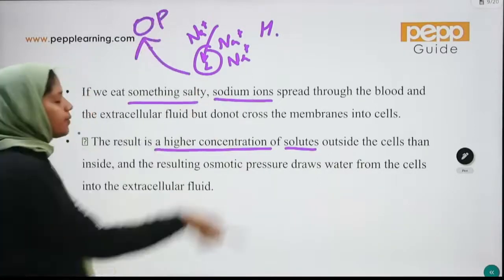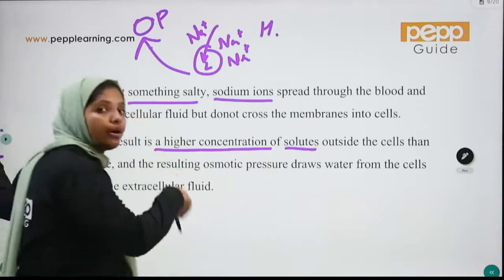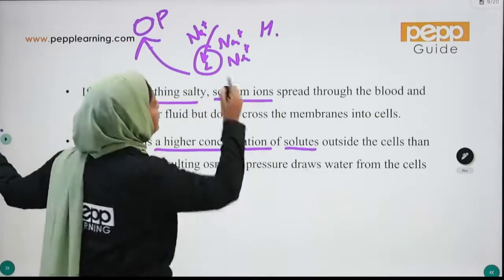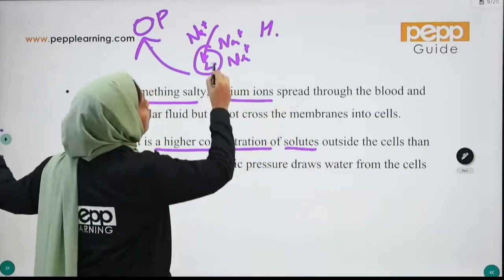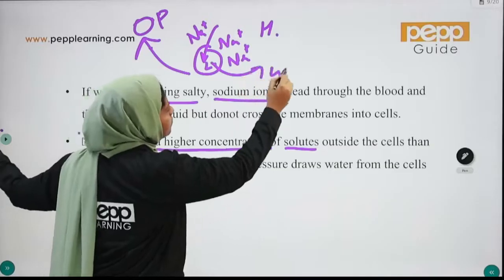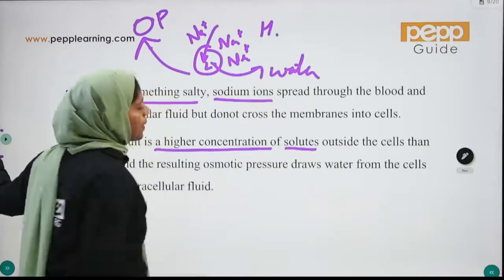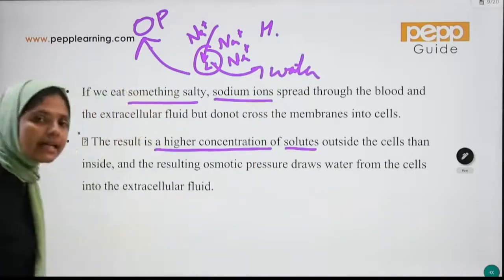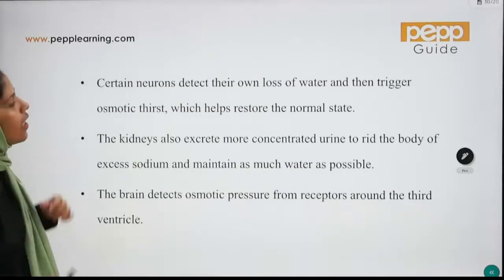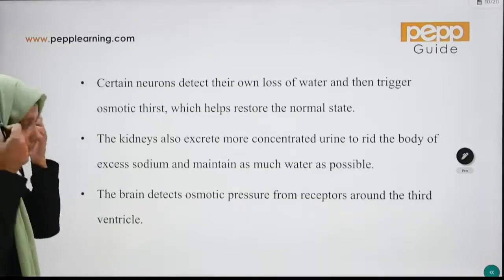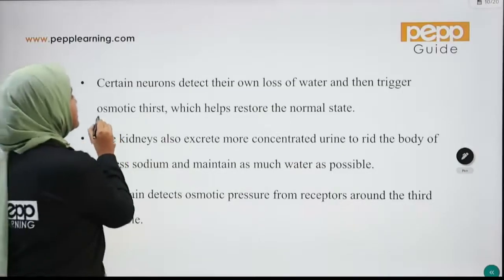There is osmotic pressure from low to high concentration, so water moves out of our cells. As a result there is less water in our cells, triggering osmotic thirst.